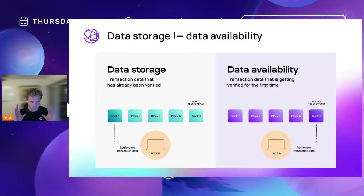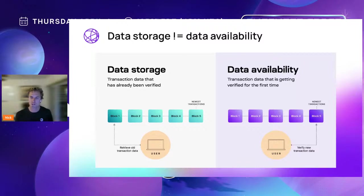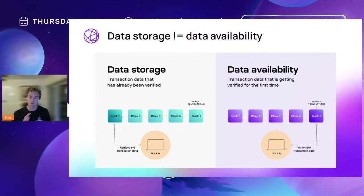Data storage is something very different — it's more like a library. There's some data that's not time-sensitive or critical to the security of the chain. We just want to make sure it's stored somewhere so we can get it in the future. A library doesn't distribute a book to a bunch of people — it just puts the book into some file storage system, and someone comes later and pulls it from the shelf. Storage and data availability are completely orthogonal things that require completely different protocol designs. That's why you can't use Filecoin or other data storage networks to do what Celestia does.